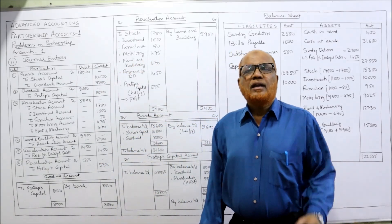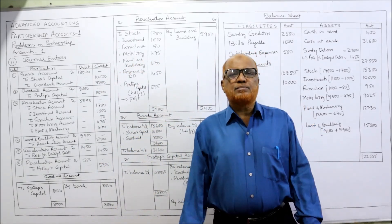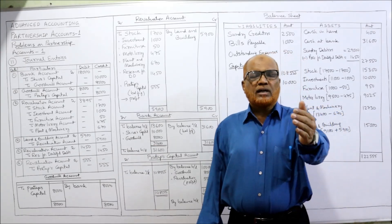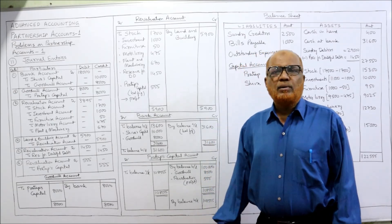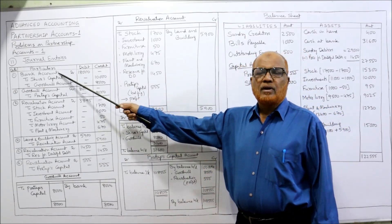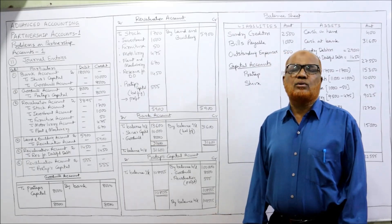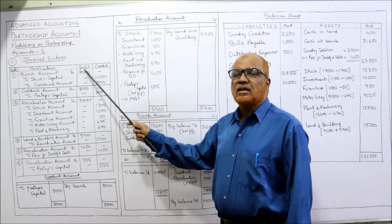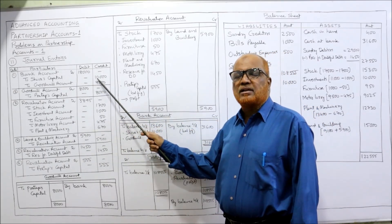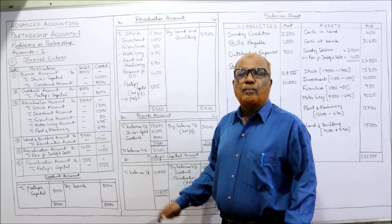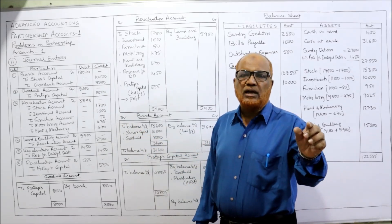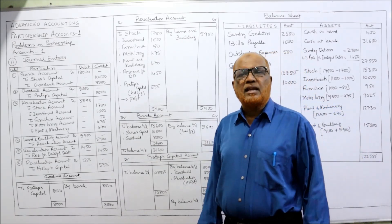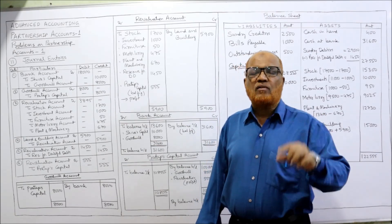First adjustment: the new partner Shiva is bringing in ₹10,000 capital and ₹8,000 goodwill. Cash is coming in, so the entry is: Bank Account Debit ₹18,000 — To Shiva's Capital Account ₹10,000 and To Goodwill Account ₹8,000 — being the cash brought in by the new partner.